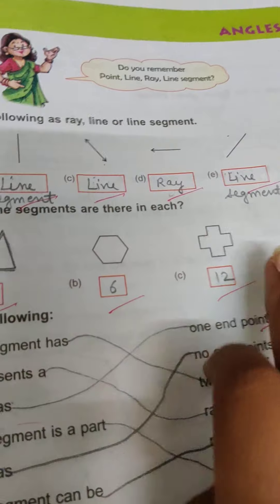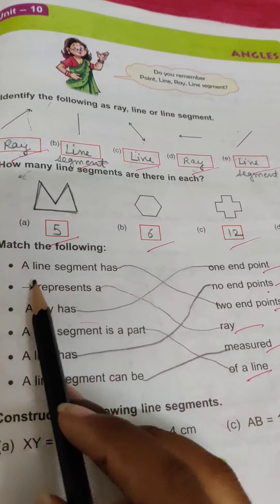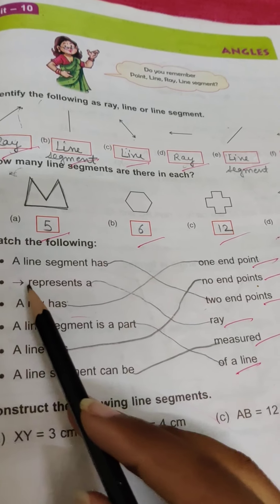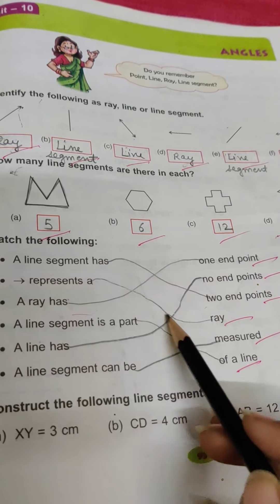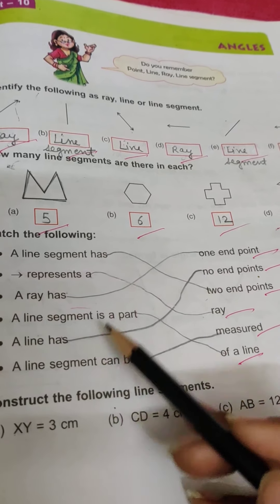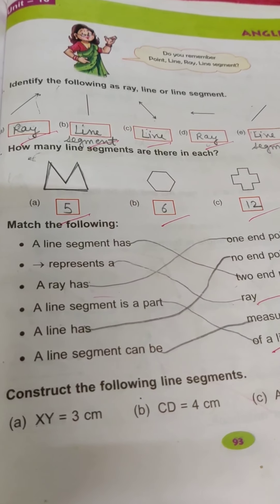This is the other side of the table. You can count. Next is match. We have a line segment has two end points. This shape represents ray has one end point. Clear? Next one is construct the following line segment.